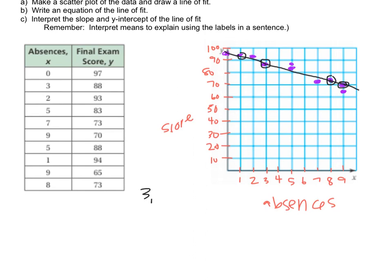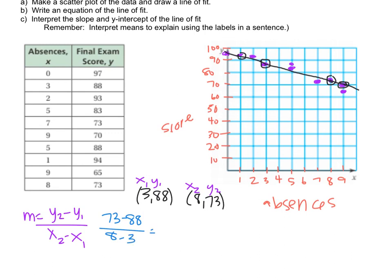So it goes through 3, 88 and it goes through 8, 73. So I'm going to use my slope formula, x1, y1, x2, y2. And remember the slope formula is y2 minus y1 over x2 minus x1. You subtract the y's, you subtract the x's, and then you turn it into a fraction. So I have 73 minus 88 over 8 minus 3. So that gives me negative 15 over 5, which is a negative 3.